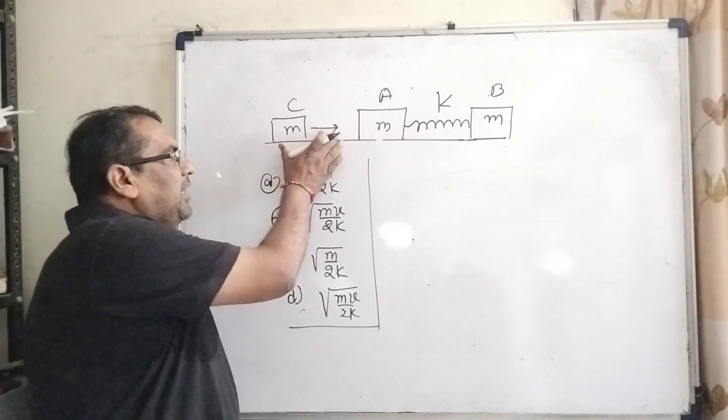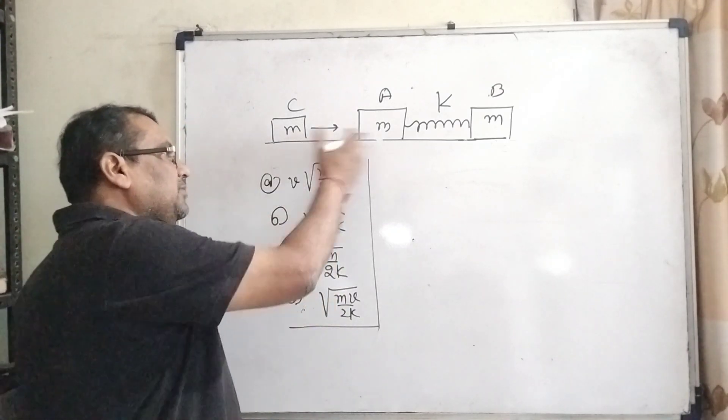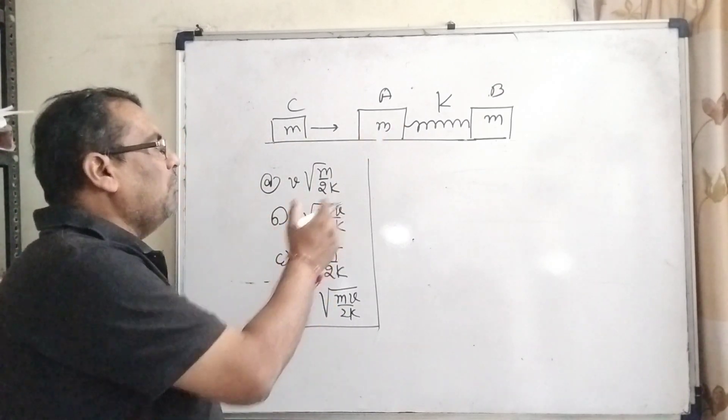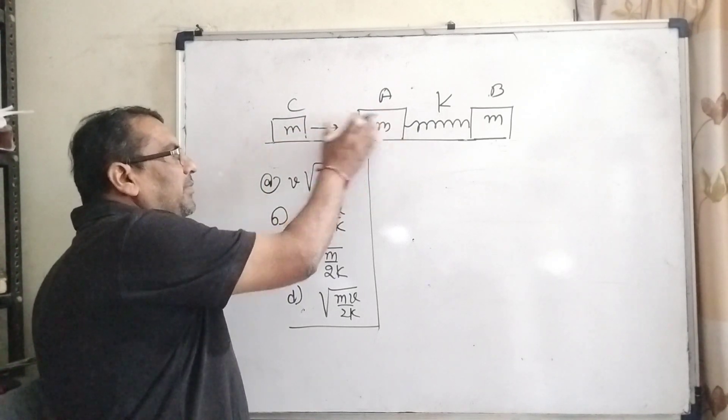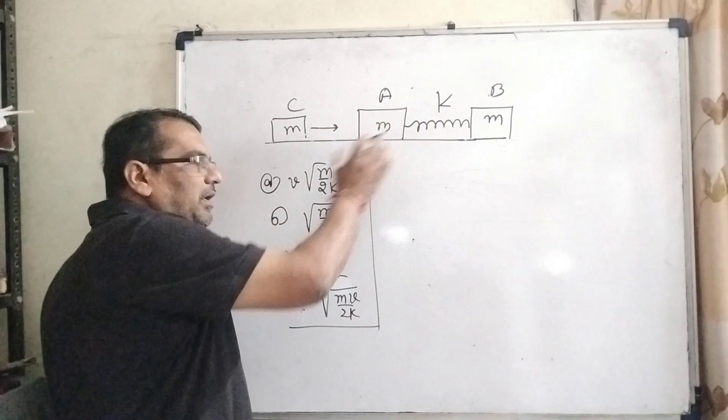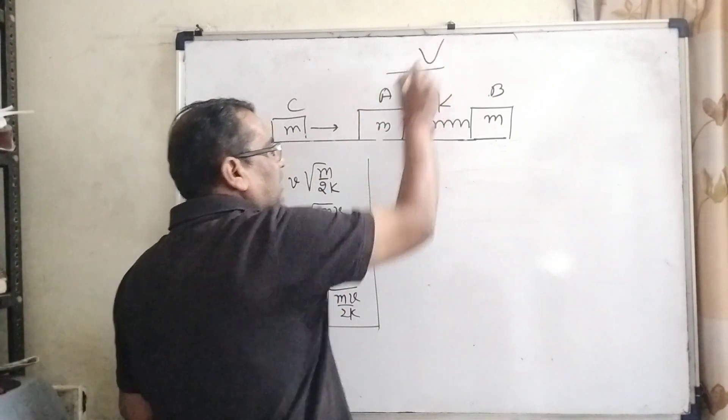Now, we have given that A, B, and C are three identical blocks, each of mass m. When C strikes A, it comes to rest, and A and B will move with the same speed. Let this speed be V.